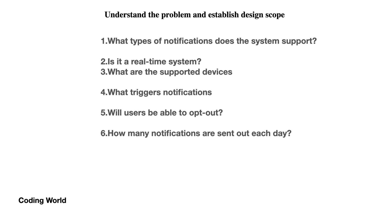If a user has multiple devices, are we going to consider all those devices? What triggers a notification? Will the user be able to opt out? If a user is sending multiple messages and gets overwhelmed, they can opt out, and if they have opted out you should not send them notifications. Also, how many notifications are sent per day — that relates to rate limiting.